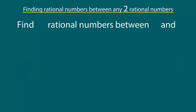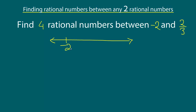Let's take a look at one more example. Now let's say we want to find four rational numbers between minus two and two over three. On the number line, minus two is a negative integer somewhere over here, and two over three will be somewhere over here. Using the average method, we start by taking the average of these two numbers to find the midpoint x1 between minus two and two over three. Then we find the average of minus two and x1 to get x2, and the average of x1 and two over three to get x3. This gives us the first three numbers.